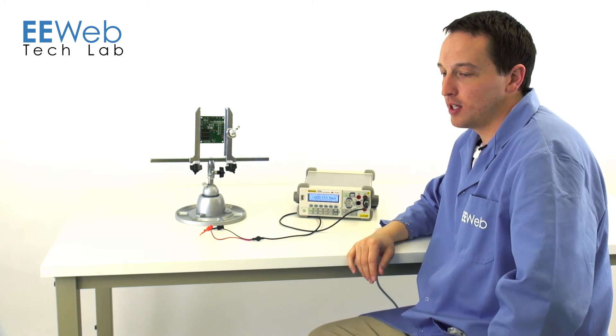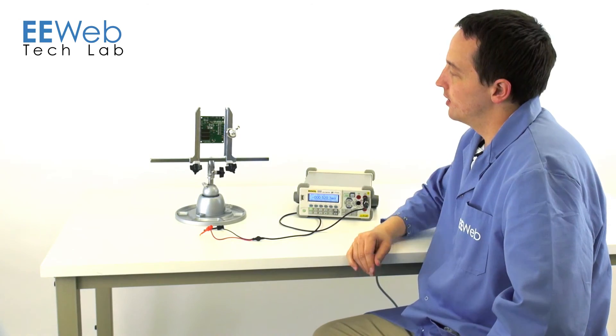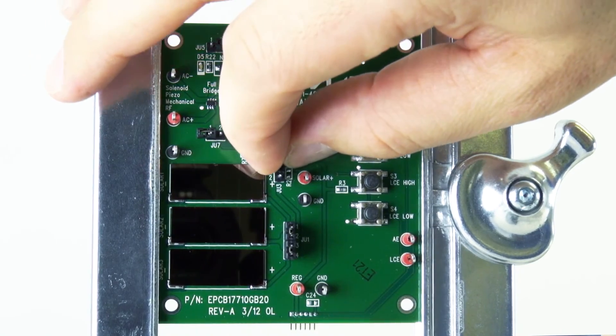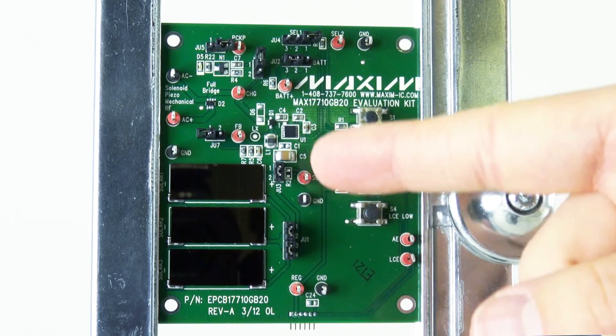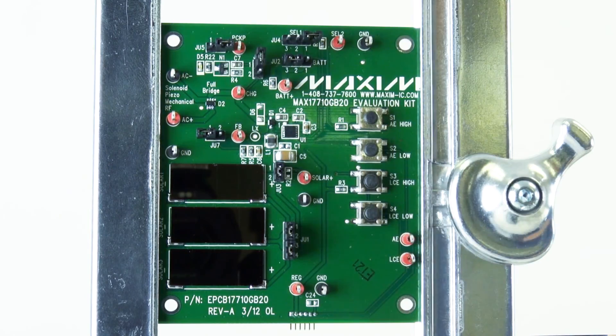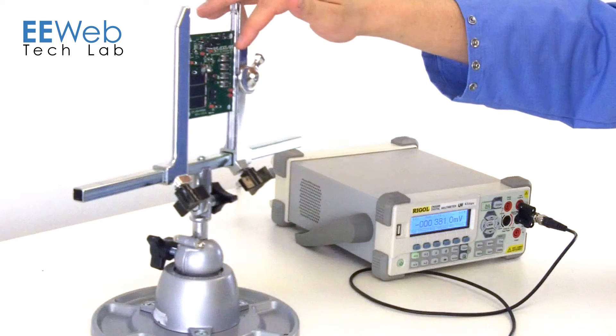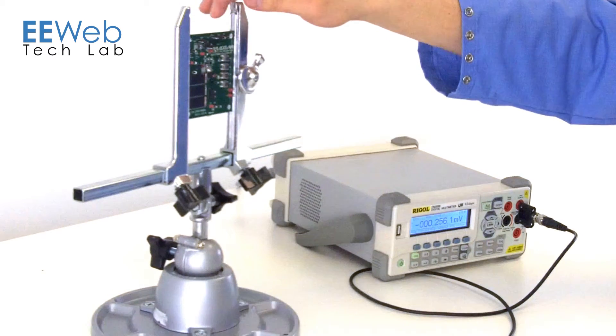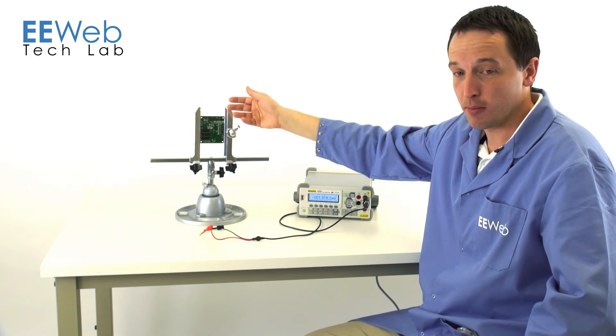this is where you would leave this jumper disconnected and you would connect your source either to the solar plus and ground or to the AC plus and AC minus test points. So now we have our solar cells connected up to the IC and our IC is charging our battery.